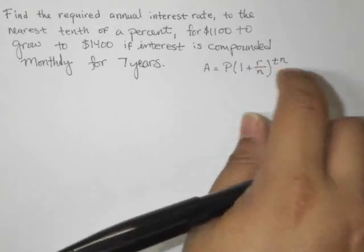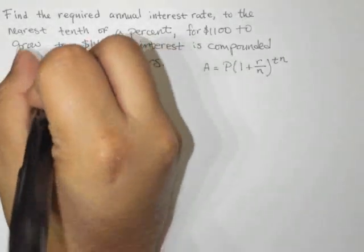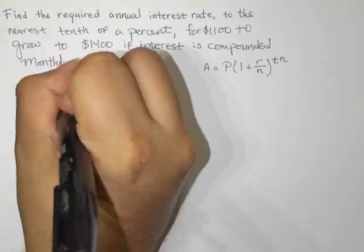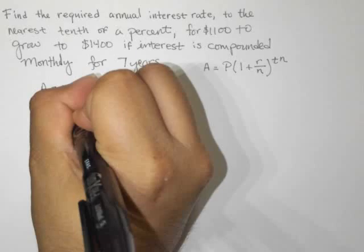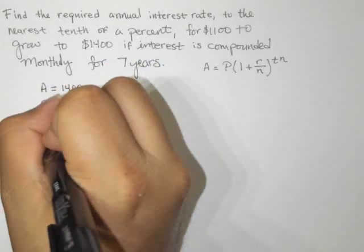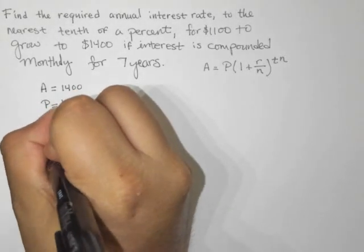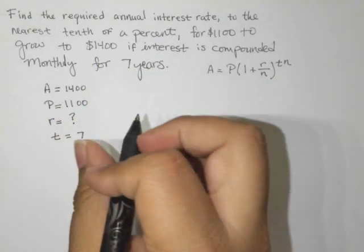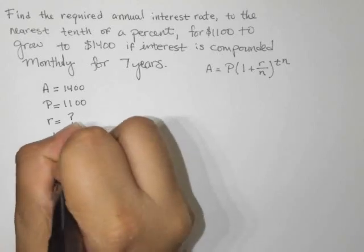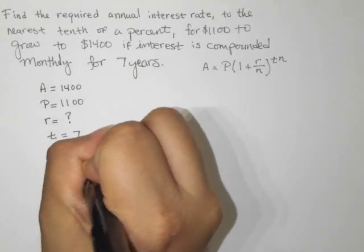So we are looking in this case for R, and it's a little bit of a process to do this, so be sure that you have your calculator handy. But let's write down what we know. We know that the future value is going to be $1,400. We know that presently today we have $1,100. We know nothing about the interest rate, so I'm going to put a question mark. We know that for T, as far as years are concerned, it's seven years. And N is the number of times we're compounding, and it's said here monthly, so we are going to make this 12.